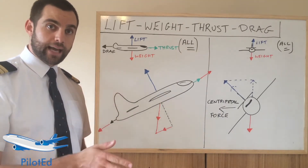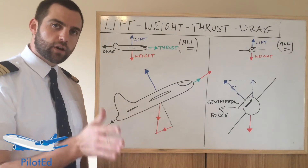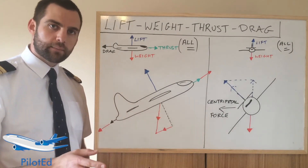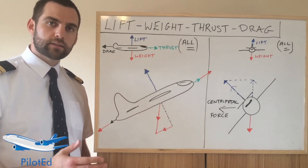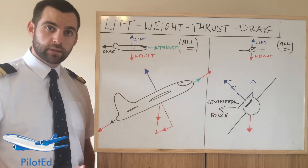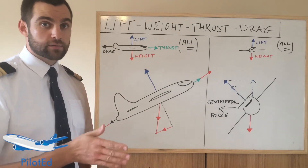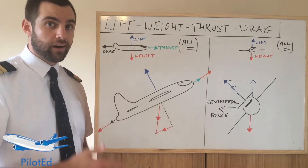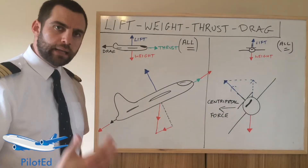If the TAS and angular bank are the same, your radius of turn will be the same, no matter what your weight, no matter the type of aircraft. If you double your TAS, the rate of turn will be halved. Very important points to remember.